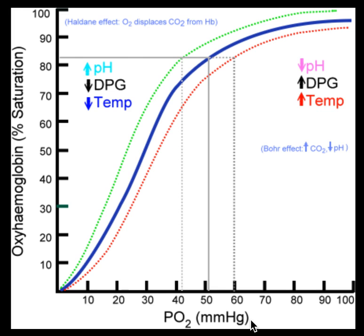For the benefit of learning this for the first time, imagine that the PO2 is in the tissues of the body. The value of 100 over here is 100 millimeters of mercury, which is the pressure of oxygen — but you can just think of it as a lot of oxygen. It doesn't mean 100%, but you might as well think of it that way: a lot of oxygen on the right side, very low oxygen on the left. Think of this as the tissues — it's useful for learning this for the first time.